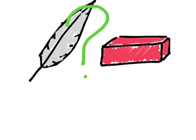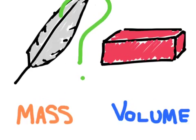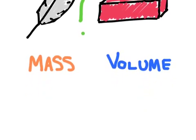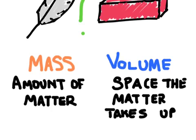Mass and volume. Remember that mass is a measure of the amount of matter, or how much stuff there is. And volume is a measure of how much space that matter takes up. When we put these units together we come up with density.